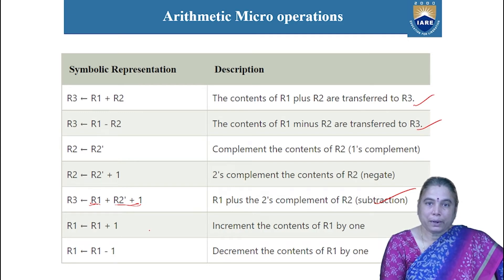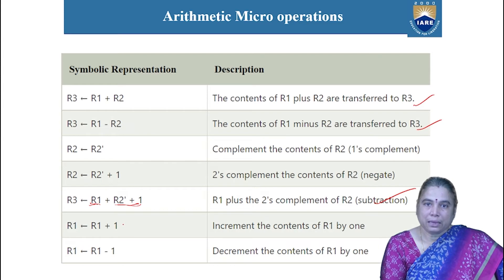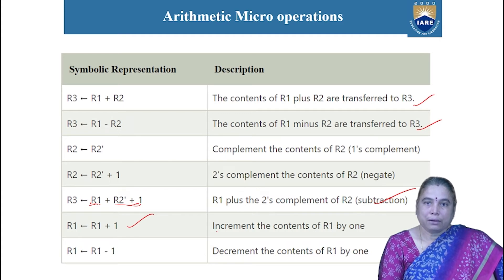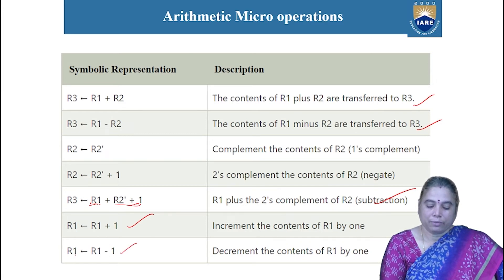The increment operation is denoted as R1 ← R1 + 1, meaning one value is added to increment the previous register value. The register R1 value is incremented by 1 and the result is stored in R1. The decrement operation causes the value of a register to be decremented by 1 — the content is reduced by 1. So the decrement is represented as R1 ← R1 − 1, with the result stored in R1. These are the RTL notations of the binary arithmetic operations.